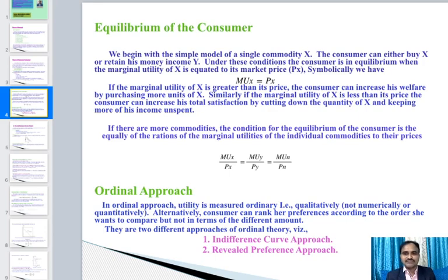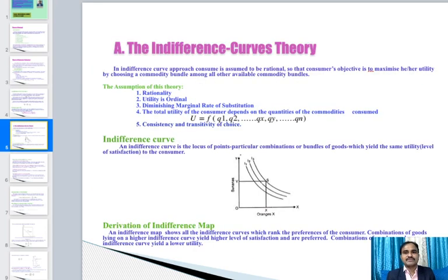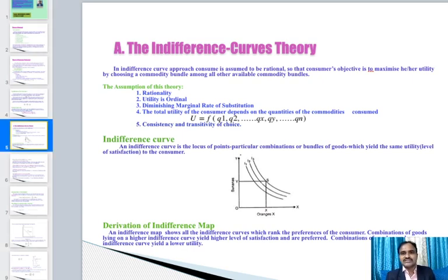There are two different approaches within ordinal theory: the indifference curve approach and the revealed preference theory approach. In the indifference curve approach, the consumer is assumed to be rational, and the consumer's objective is to maximize utility by choosing a commodity bundle among all other available bundles.